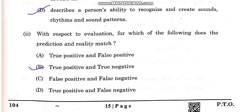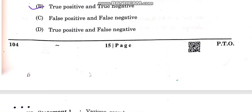With respect to evaluation, which of the following indicates that the prediction and actual label match? The correct answer is D option: true positive and true negative.